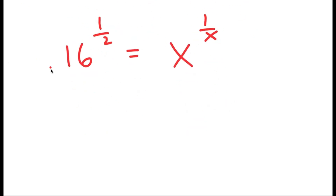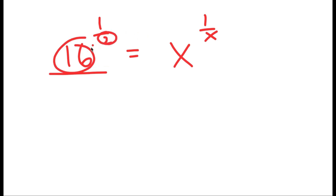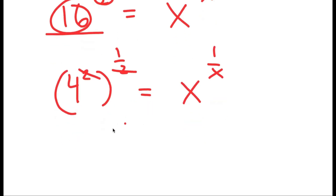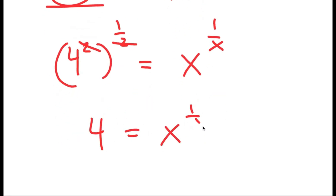My goal is to get the left side into the form of some number to the power of 1 over that number, so that number is our solution. Right now, 16 and 2 need to become the same number. Since 16 equals 4 squared, I rewrite it as 4 squared to the power of 1 half. The exponents multiply: 2 times 1 half is 1, so I get 4 equals x to the power of 1 over x. Therefore x equals 4.